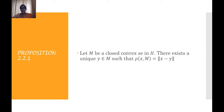Now let's see a proposition related to the projection concept. Let M be a closed convex set in H. There exists a unique y element of M such that ρ(x, M) = ‖x − y‖. That is, if M is a closed convex set in the given Hilbert space, then we can definitely find a projection of x — a unique y which satisfies ρ(x, M) = ‖x − y‖, meaning the distance is attained at the point y.